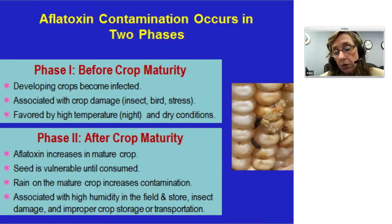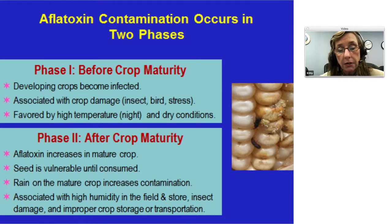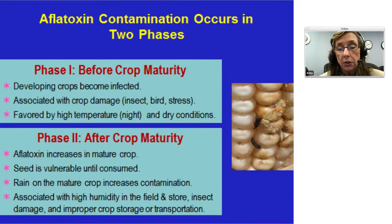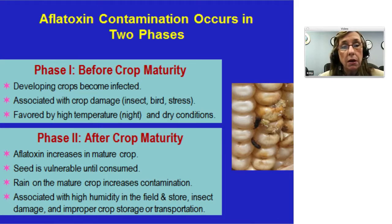The grain is vulnerable until it's consumed. Rain on a mature crop will increase contamination with toxins, as will high humidity in the field or store. Any insect damage — this is showing the larger grain borer — any improper storage or transportation condition will increase the amount of toxins.